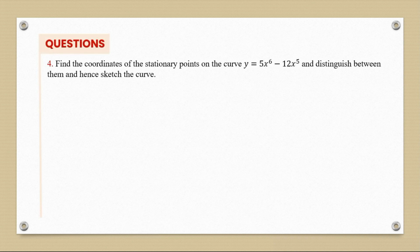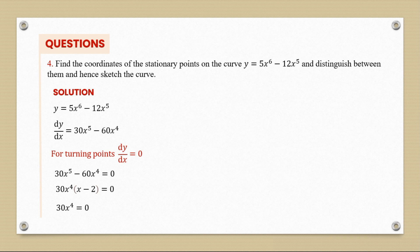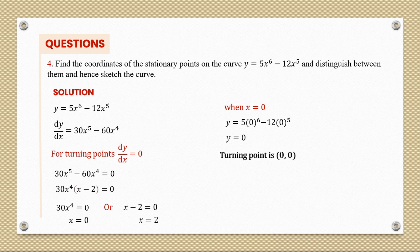Question 4: find the coordinates of the stationary points on y = 5x⁶ - 12x⁵, distinguish between them, and sketch the curve. Differentiating gives dy/dx = 30x⁵ - 60x⁴. Setting dy/dx = 0 and factorizing: 30x⁴(x - 2) = 0, giving x = 0 or x = 2. When x = 0, y = 0, so the turning point is (0, 0).